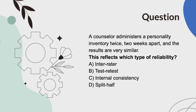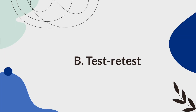A counselor administers a personality inventory twice, two weeks apart, and the results are very similar. This reflects which type of reliability? A, inter-rater. B, test-retest. C, internal consistency. Or D, split-half. And the answer is B, test-retest.